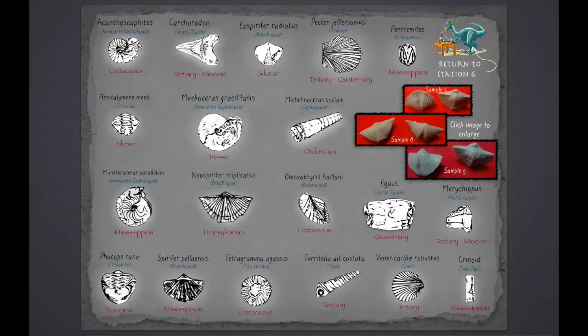But it's important to distinguish, for example, Spirifer pelanasis is a Mississippian brachiopod, which is really important if you're in Kansas or Missouri and you're looking for oil, because oil would have formed in the same age rock as this fossil.